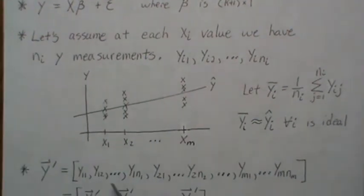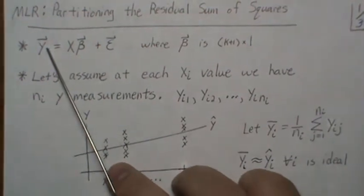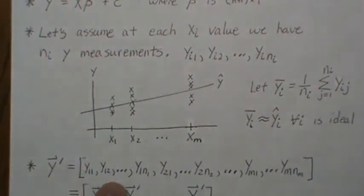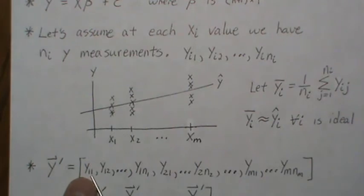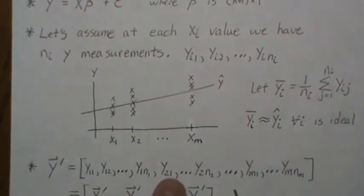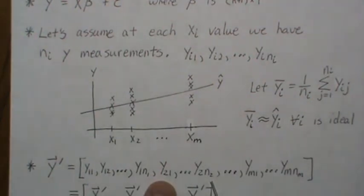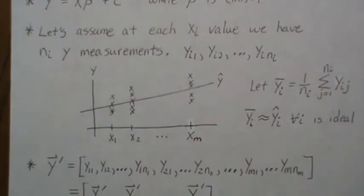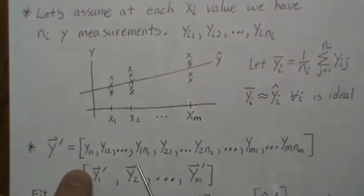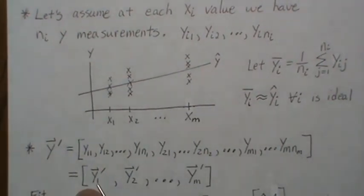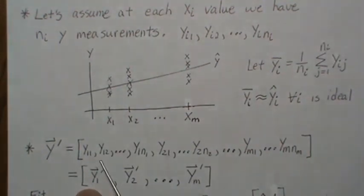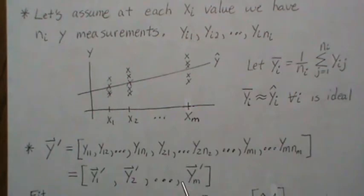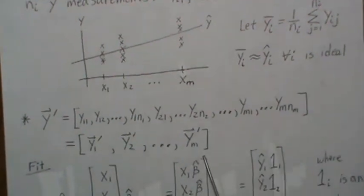Notationally, the y vector written as a row is: y_{11}, y_{12}, up to y_{1,n_1}, then y_{21}, y_{22}, up to y_{2,n_2}, and so on for the m-th x. We then organize these into sub-vectors: y_1 is an n_1 by 1 vector, y_2 is n_2 by 1, and so on up to y_m. This is how we represent our y data.